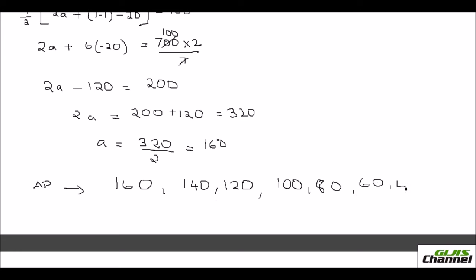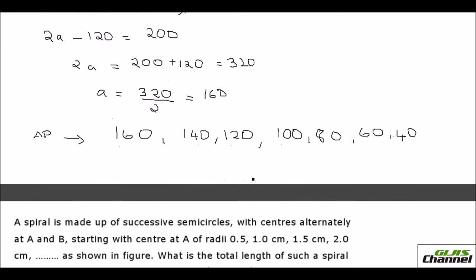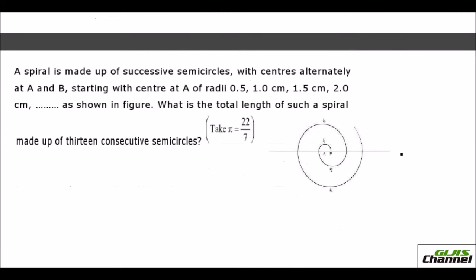The AP of prize values starts at 160 and reduces by 20 each time, giving: 160, 140, 120, 100, 80, 60, 40. That's 7 prizes in total — the cash prizes given to the students in order.